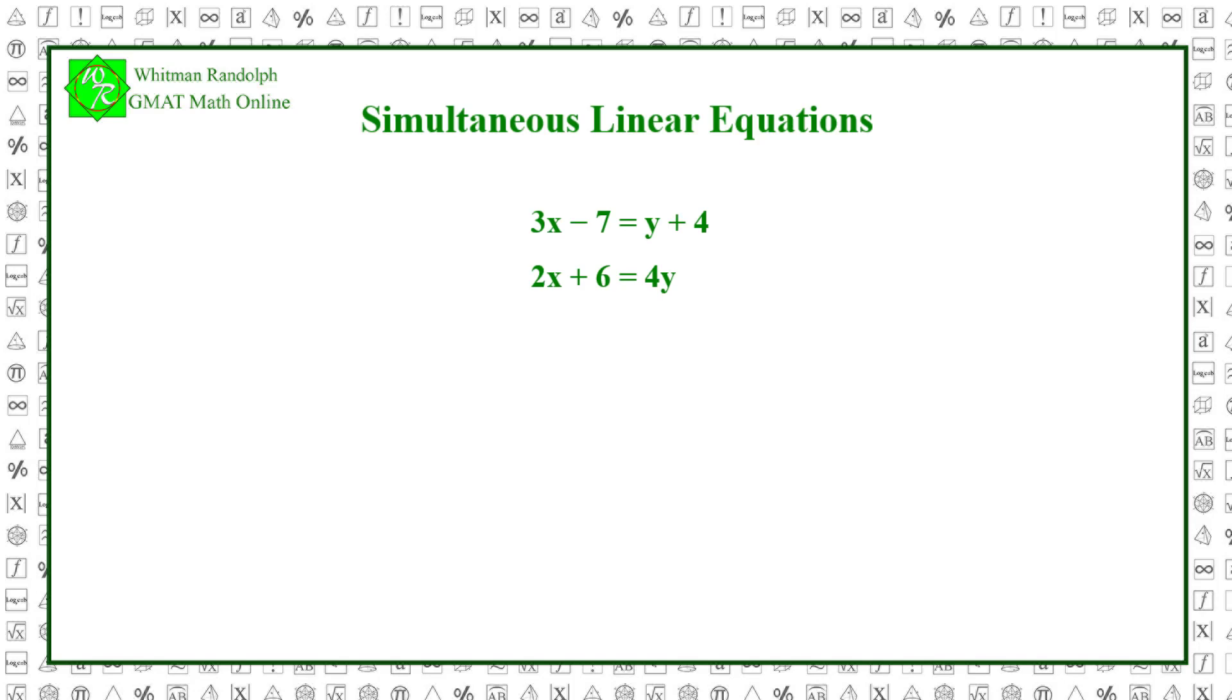For example, here is a system of two equations in two unknowns. 3x minus 7 equals y plus 4 and 2x plus 6 equals 4y. As you can see, there are two unknowns, x and y. The solution is x equals 5 and y equals 4. We show how to get this solution later in the video.